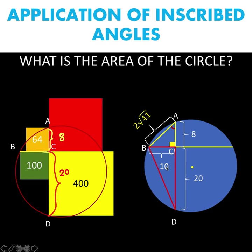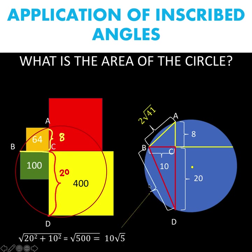Next, let's connect points B and D to form the right triangle BCD. In this right triangle, side BC is 10 units and side CD is 20 units. Using the Pythagorean theorem again, the length of hypotenuse BD equals the square root of 20 squared plus 10 squared, which equals the square root of 500, or simplified, 10 square root of 5.